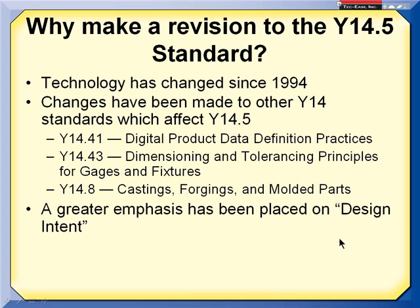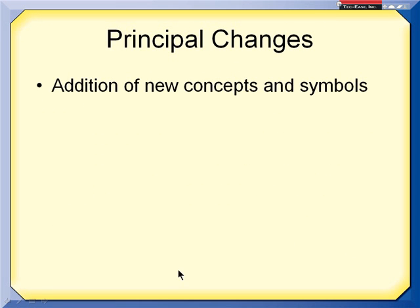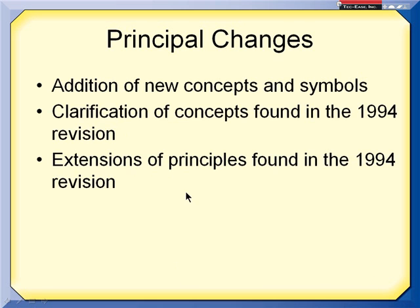There is a greater emphasis now on design intent, and the principal changes include the addition of new concepts and symbols — there are seven new symbols. Also, clarification of concepts that were found in the 1994 standard but weren't well explained or understood, and an extension of some principles, such as composite tolerancing. Now the standard shows us what it means if you have more than two segments in a composite.